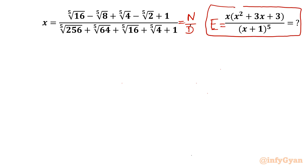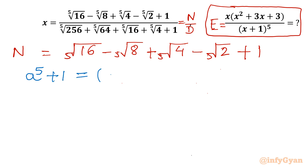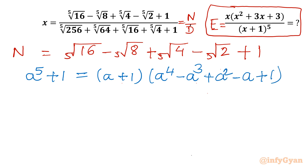I will calculate numerator n and denominator d separately. So n equals 5th root of 16 minus 5th root of 8 plus 5th root of 4 minus 5th root of 2 plus 1. Now I will use one binomial expansion formula: a⁵ + 1 equals (a + 1)(a⁴ - a³ + a² - a + 1). Now let us substitute a equal to 5th root of 2.